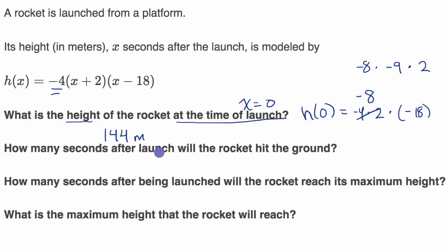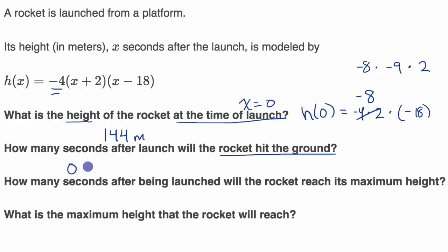How many seconds after launch will the rocket hit the ground? What does it mean for the rocket to hit the ground? That means the height is equal to zero. So we want to figure out the x when our height is equal to zero. We can set up an equation: h of x equals zero. So zero is equal to negative four times x plus two times x minus 18.